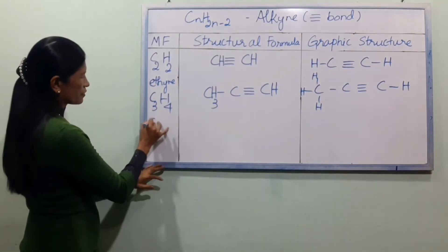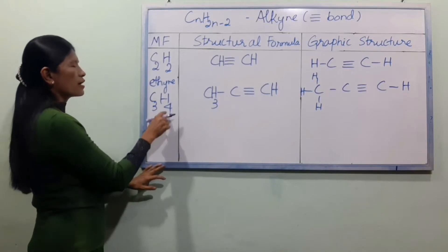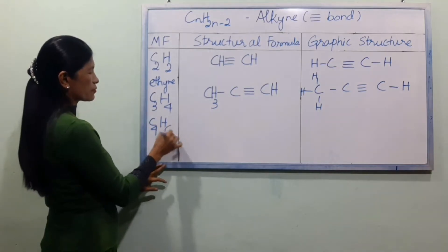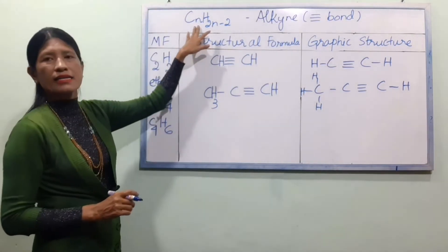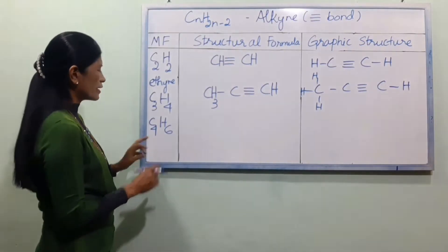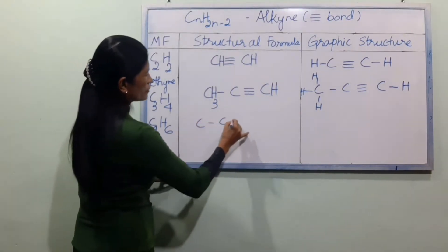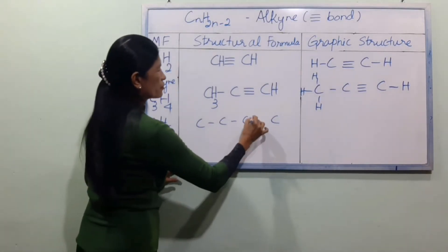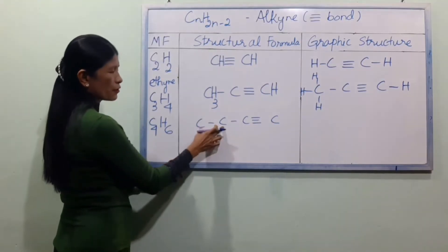C4 is the next hydrocarbon. C4 has a structural formula numbered 1, 2, 3, 4. See that the chain comes down at C3 and bears a branch.